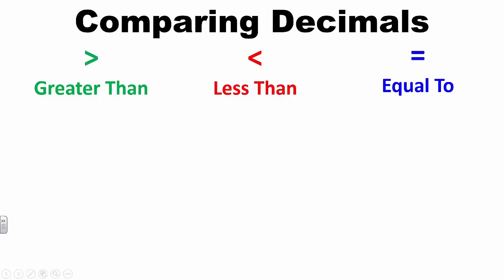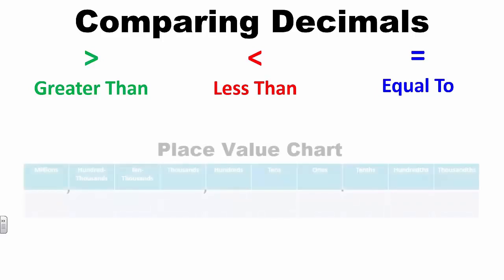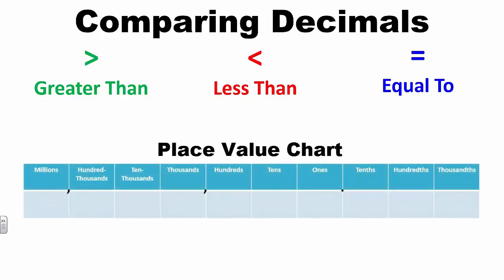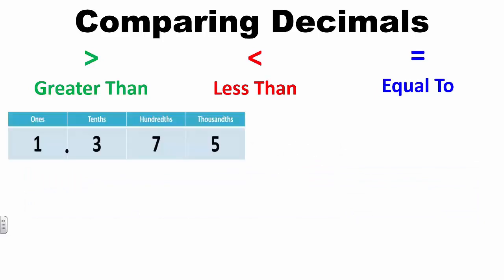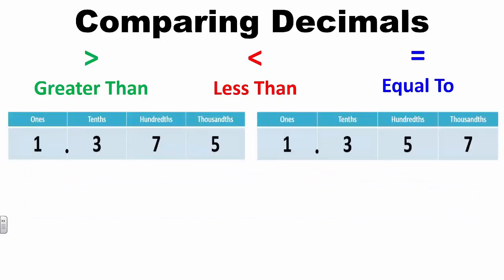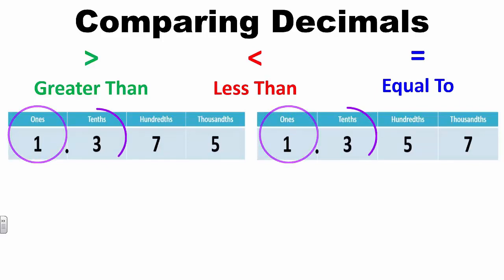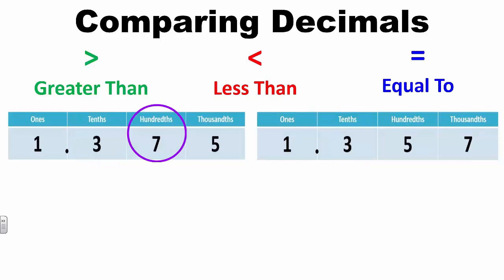When comparing decimals, students will use the symbols greater than, less than, and equal to to compare two decimals to the thousandths place value position. Using a place value chart can assist students with comparing tenths to tenths, hundredths to hundredths, and thousandths to thousandths. Let's compare the numbers 1 and 375 thousandths and 1 and 357 thousandths. Both numbers have a 1 in the ones place and a 3 in the tenths place. However, 1 and 375 thousandths has a 7 in the hundredths place and 1 and 357 thousandths has a 5 in the hundredths place.